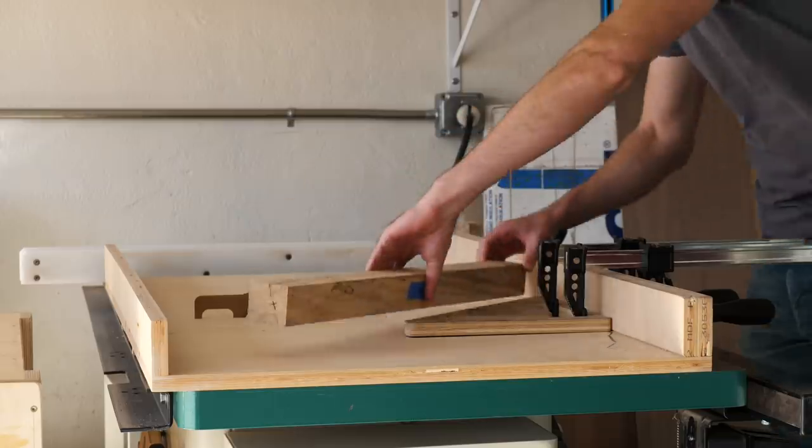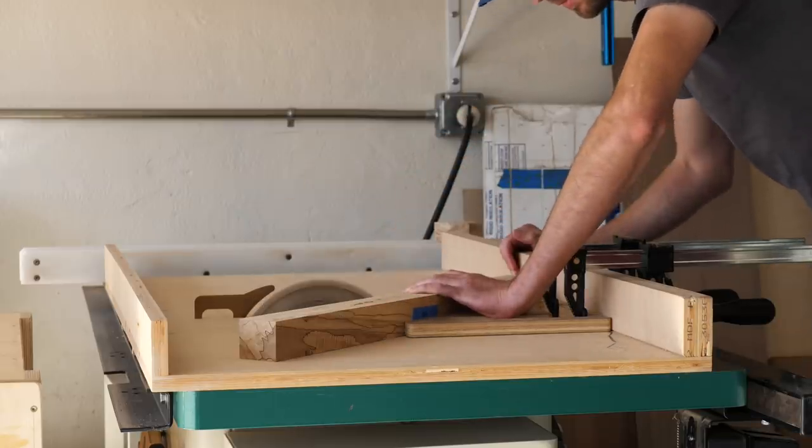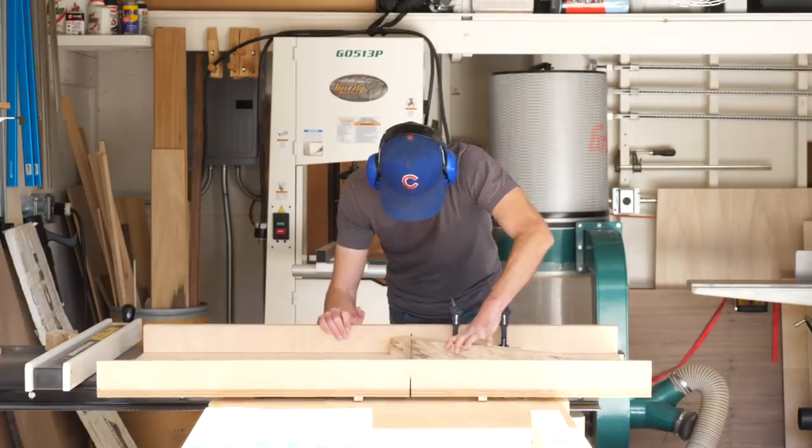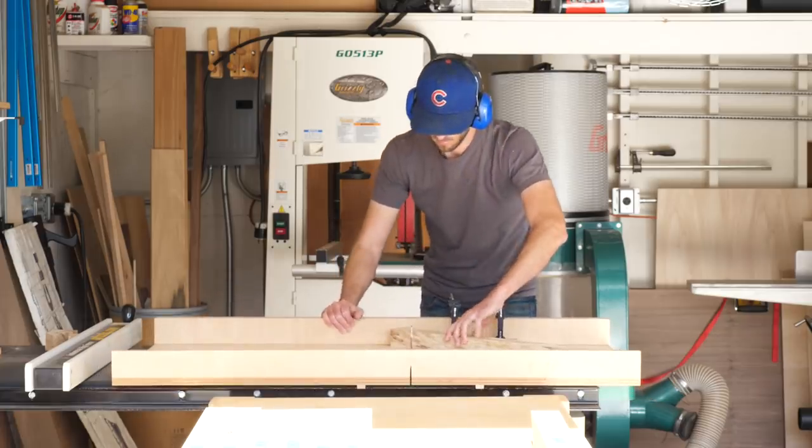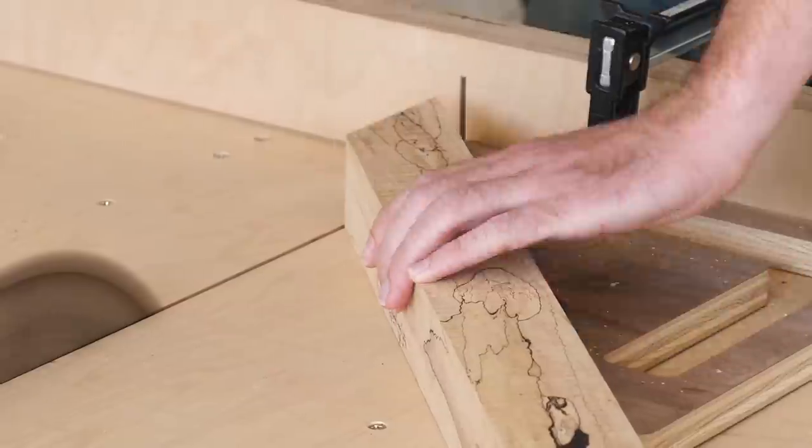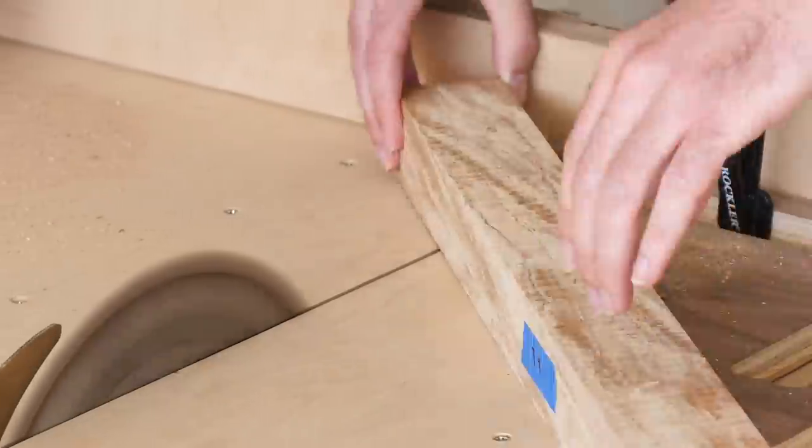Then I took this 45 degree square thing that I made on my CNC, clamped it to my fence, and proceeded to cut a bevel, or miter—I don't even know anymore—onto one end of my pieces. There were a lot of pieces.